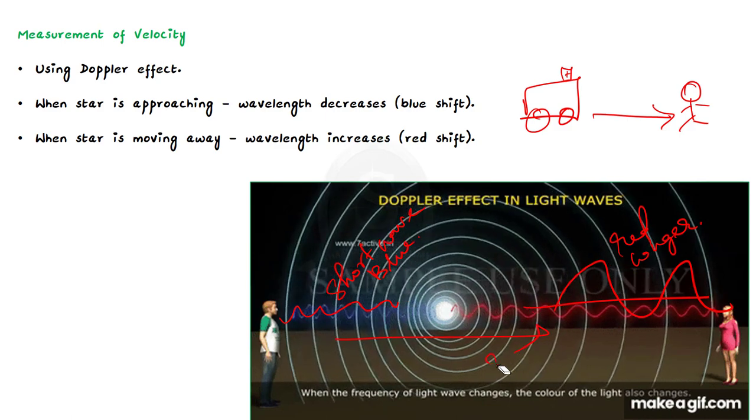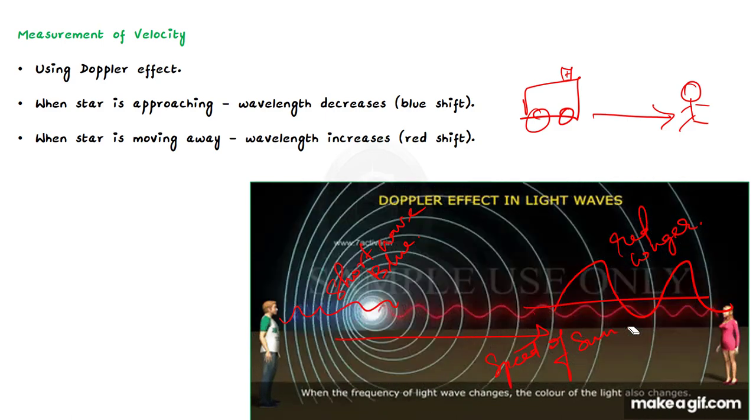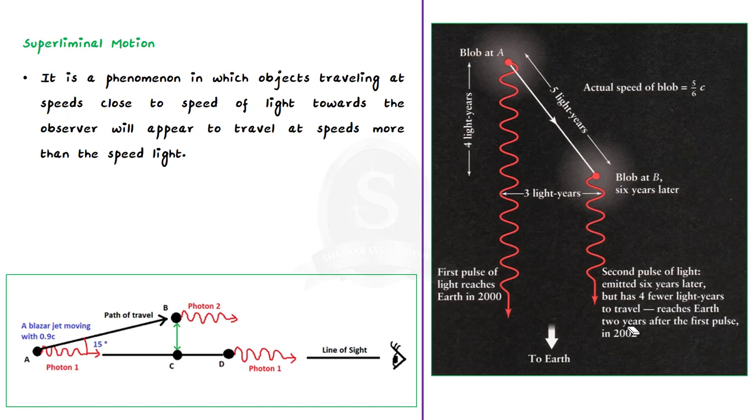Having understood how we find the speed and distance of stellar objects, let us see about superliminal motion. Say an object which is light years away from Earth is moving towards Earth. If we want to find the speed of the object, we will find the time taken for the object to move from point A to point B. If we find the distance between point A and point B and divide it by time taken, we can find its speed, right?